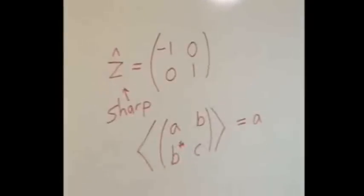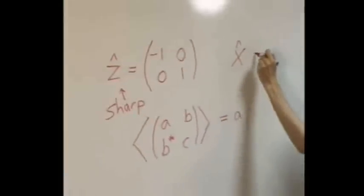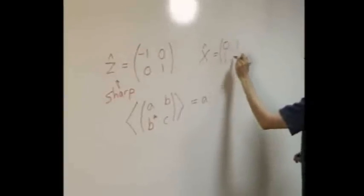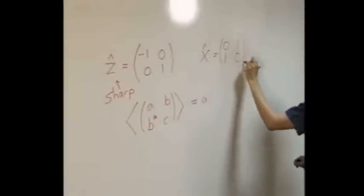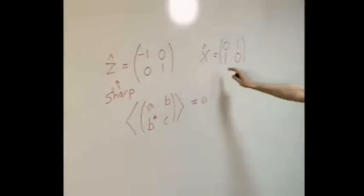Now, let's think about measuring a different observable of this same qubit at time 0. Let's say this one, x equals 0, 1, 1, 0. So, we can read off the expectation value. It's the top left corner. The expectation value of x is 0.